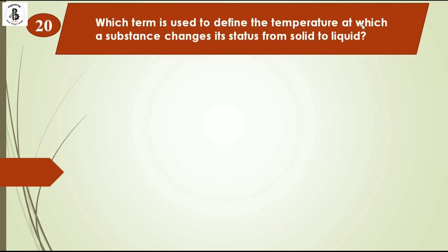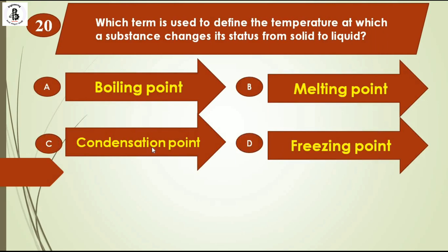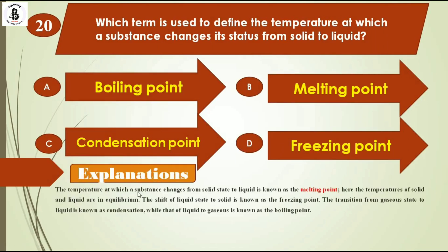Which term is used to define the temperature at which a substance changes its state from solid to liquid? Option A boiling point, option B melting point, option C condensation point, option D freezing point. The temperature at which a substance changes from solid state to liquid state is known as the melting point. Each material has a different melting point. The shift from liquid to solid is freezing, gaseous to liquid is condensation, and liquid to gaseous is the boiling point. So the right answer is option B, melting point.